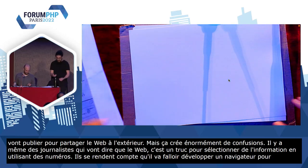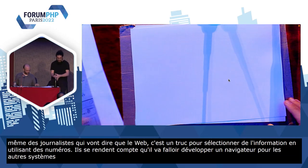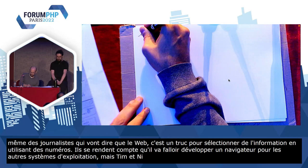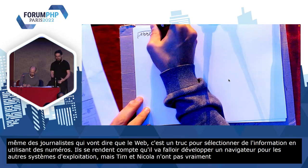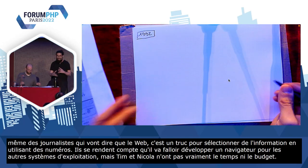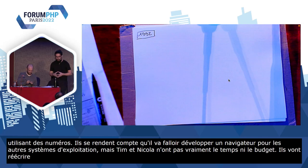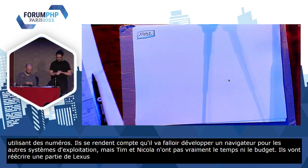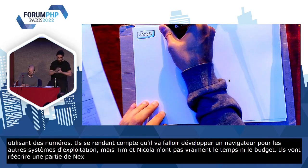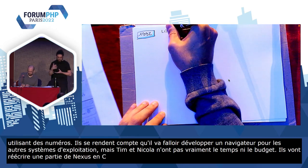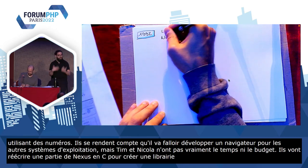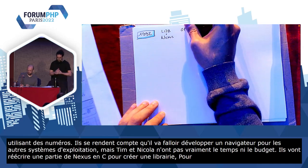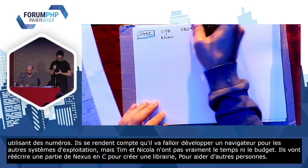Mais Tim et Nicolas, ils n'ont pas vraiment le temps, ils n'ont pas vraiment le budget, ils n'ont pas vraiment d'aide. Ils vont réécrire une partie de Nexus en C — parce que c'est de l'Objective-C à la base — mais juste pour créer une librairie qui s'appellera The Common Library, ou libwww, pour aider d'autres personnes à faire un navigateur. Et donc, Tim va prendre son petit bâton de pèlerin.